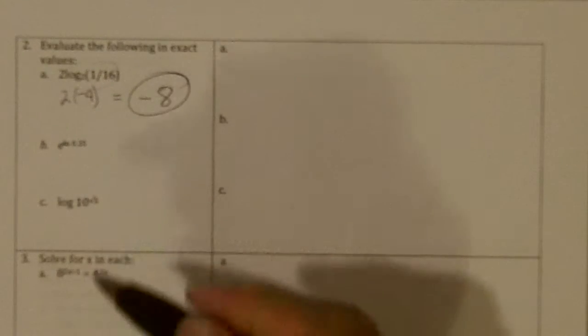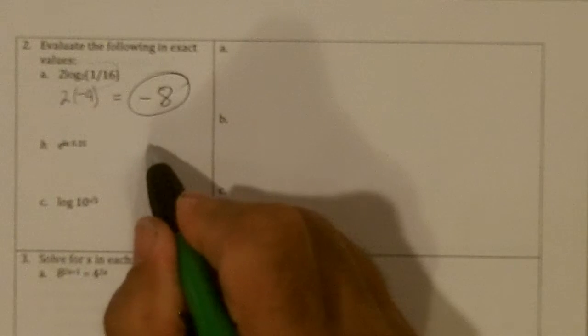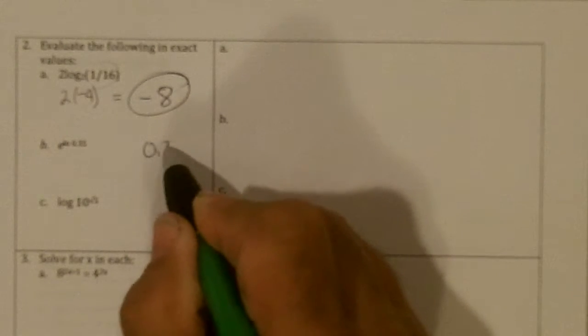e to the ln are just inverse operations and they nullify each other, and we get 0.35.